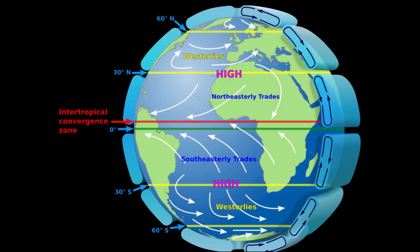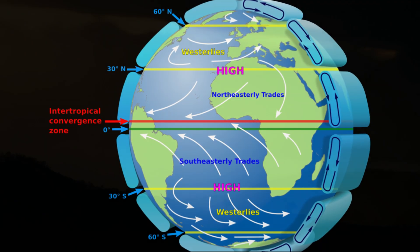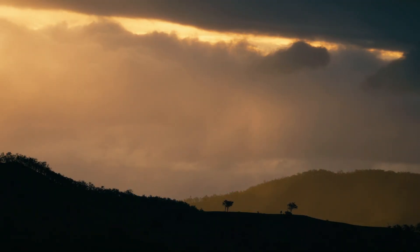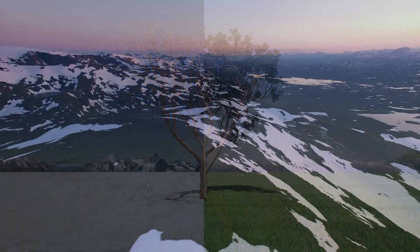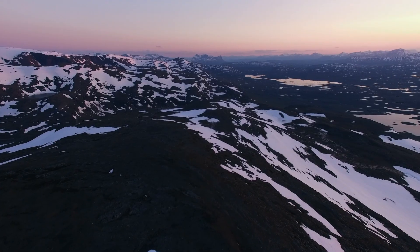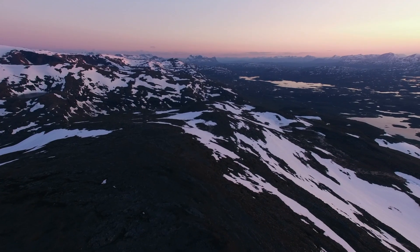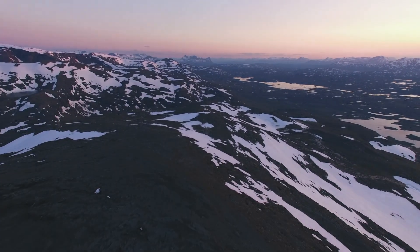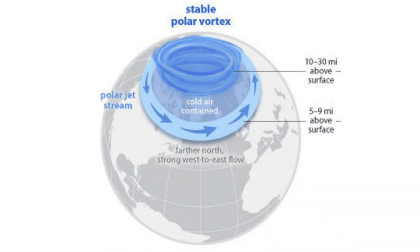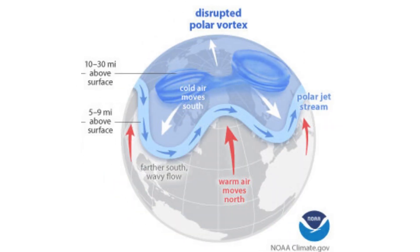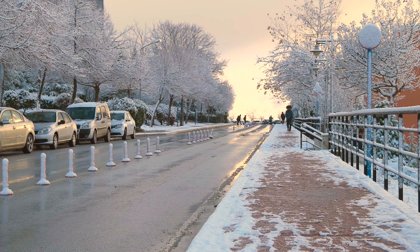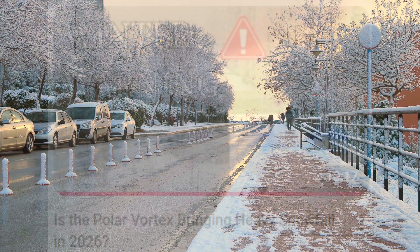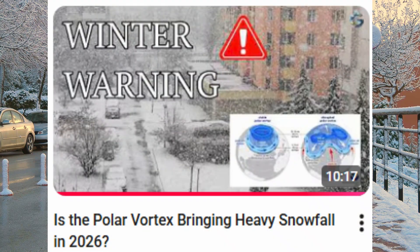The jet stream does not operate on its own. It is part of a much larger atmospheric system and constantly interacts with several major weather and climate patterns that influence how seasons unfold. One of the most important of these is the polar vortex — a large circulation of extremely cold air high above the arctic, mainly in the stratosphere. When it is strong and stable, it keeps the cold air locked near the pole. But when the polar vortex weakens or becomes disturbed, cold air can escape more easily and plunge into the United States, Europe, and Asia.